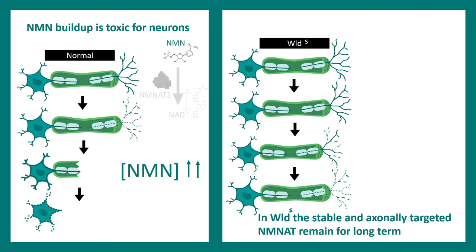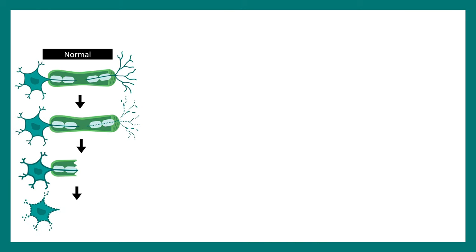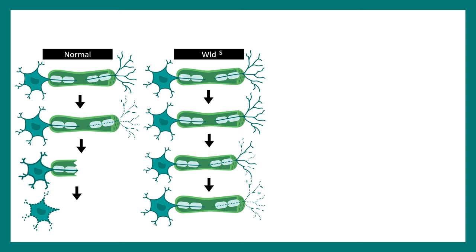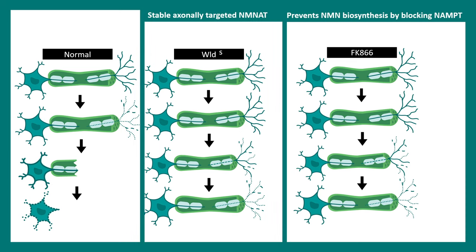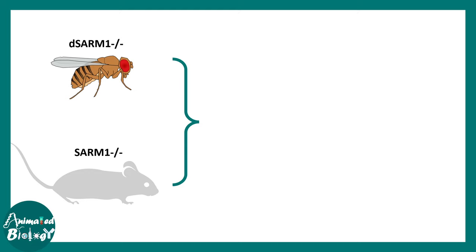In the normal situation a WldS mutation leads to a stable NMNAT and a slow degeneration. Also, an enzyme that can inhibit the biosynthesis of NAMPT — which is required for NMN biogenesis — can also slow the process and mimic the phenotype of WldS. All these evidences suggest that NMN level in the axon or axonal terminal is super important for Wallerian degeneration. Later, several other mutants in mice and Drosophila identified SARM1 as a key executor molecule in this entire degeneration process — analogous in role to cleaved caspase-3.